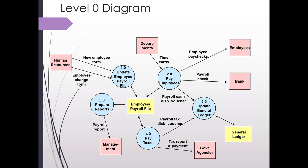Step one is to update the payroll file. Notice these are still pretty high-level processes. Step two is to pay the employees, step three is to prepare the reports, step four is to pay the taxes, and step five is to update the general ledger. Numbering should occur in the order that they are performed — for example, you need to update the payroll file before you pay employees. In many companies the last three steps could be in a different order or happen at the same time.